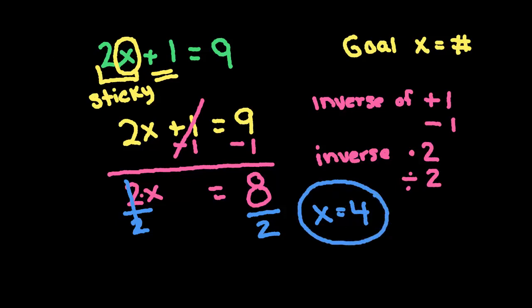Alright, let's look at another one. The next one we're going to do is 3x minus 4 is equal to 8.